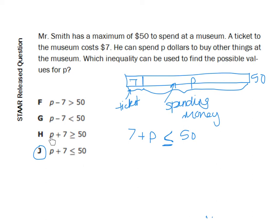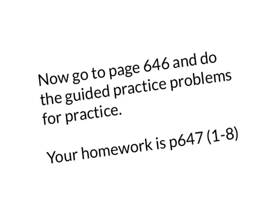This one says that whatever he spends plus the $7 can be greater than or equal to $50, which doesn't make any sense. Here they're taking the cost of the $7 away from the amount that he spends. And that is not the way the problem is worded. It says that he has a maximum, which is the most he can spend. A ticket costs $7. He could spend P dollars to buy other things. That means that the $7 is not included in that. So you just kind of have to read the problem carefully. Every one of these tests is a reading test.